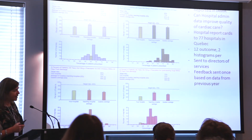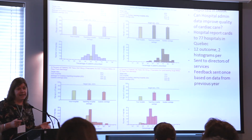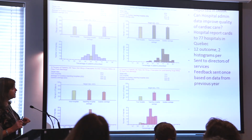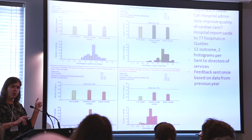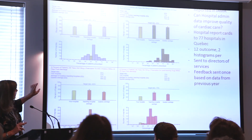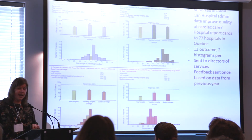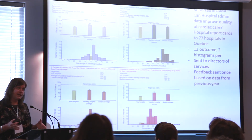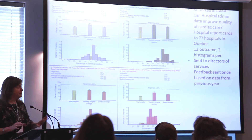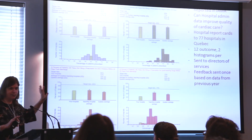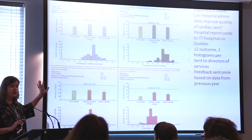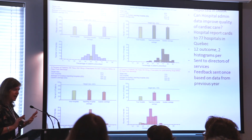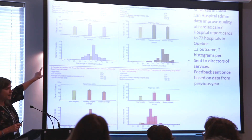This was a paper reported in JAMA. They asked: can hospital administrative data improve quality of care? They called this a hospital report card. They looked at 77 hospitals in Quebec and 12 outcomes. This is an important example because they looked at what patients were doing and gave that as feedback to providers to change their behavior — specifically, whether or not patients filled the prescriptions they were given. Your hospital is in yellow; different outcomes are different colors, but it takes a while to figure that out.